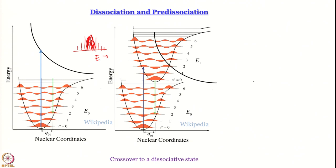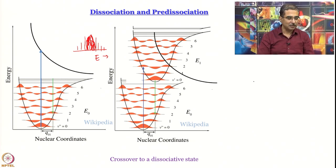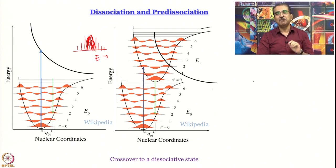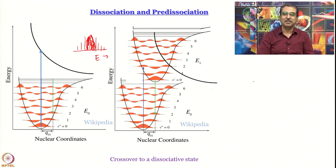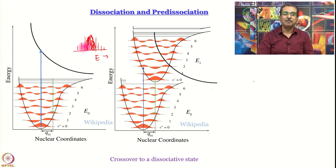This is the signature of predissociation. What we wanted to discuss about spectroscopy also includes a very elegant and important experiment performed by considering that you can bring about dissociation by excitation with UV-visible light and that potential energy surfaces can cross.